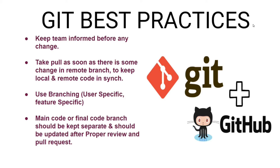While working on a Git project it is very important to follow some standard or good practices to avoid any kind of conflicts, confusion or problems in your project. Few of those best practices are: keep your team informed in advance about whatever changes you are going to make and in whatever file you are going to make those changes, so that your team knows in advance and they should not touch it, so that you will not see any conflicts in the future.